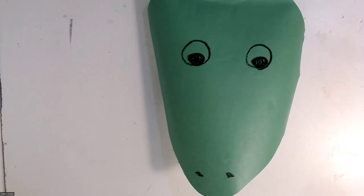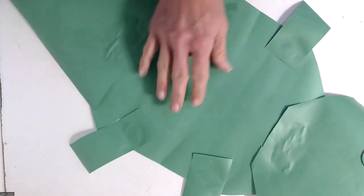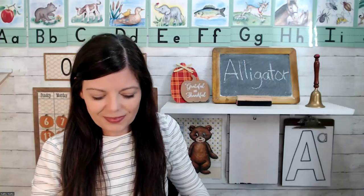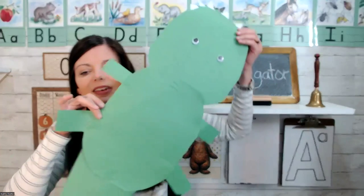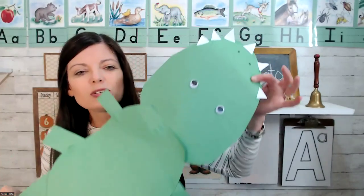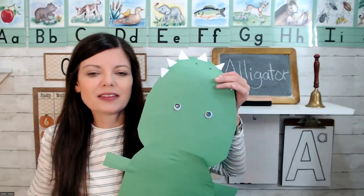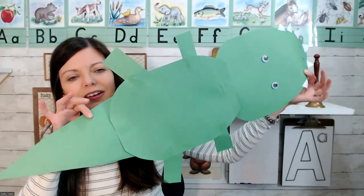All right. So this alligator is pretty giant. So I'm going to just come back around to the classroom so I can show you how he turned out. So here's my big, giant alligator. And if you want to, you can add some teeth. And this one has googly eyes. But we drew our eyes on the other one that we did at the art table.